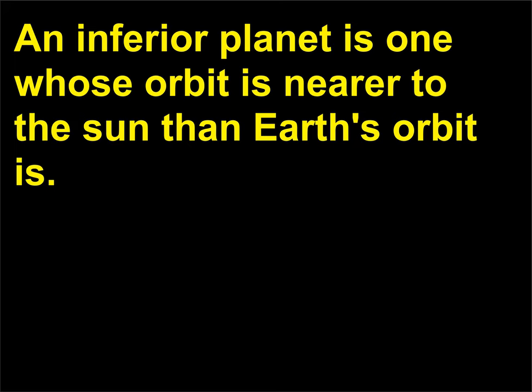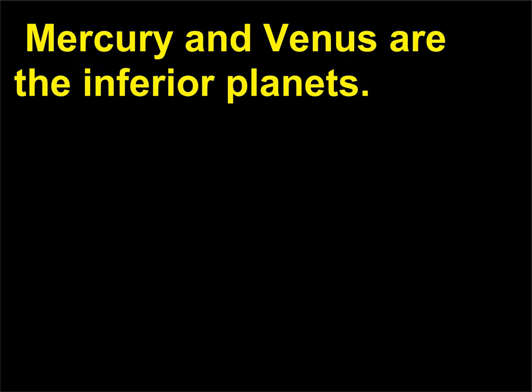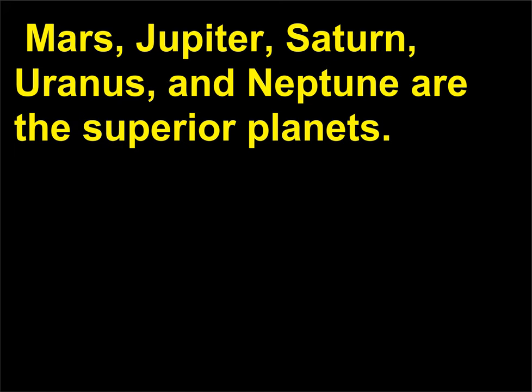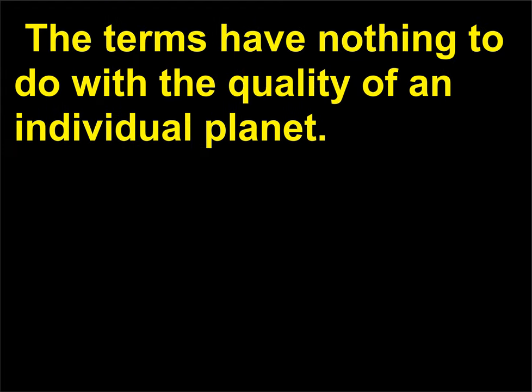An inferior planet is one whose orbit is nearer to the Sun than Earth's orbit is. Mercury and Venus are the inferior planets. Superior planets are those whose orbits around the Sun lie beyond that of Earth. Mars, Jupiter, Saturn, Uranus, and Neptune are the superior planets. The terms have nothing to do with the quality of an individual planet.